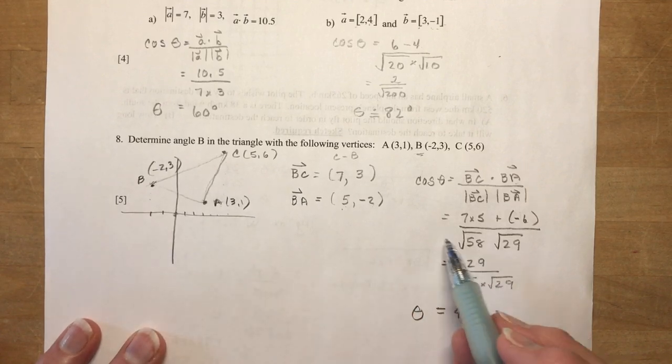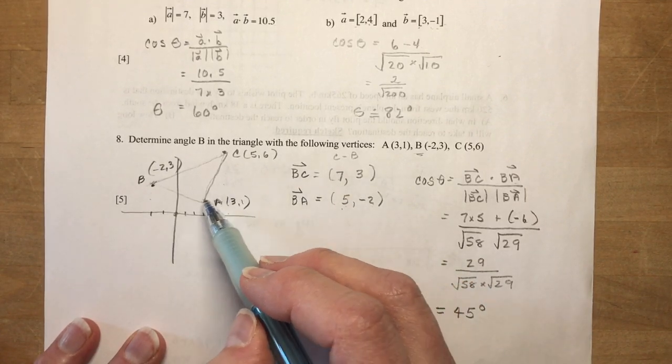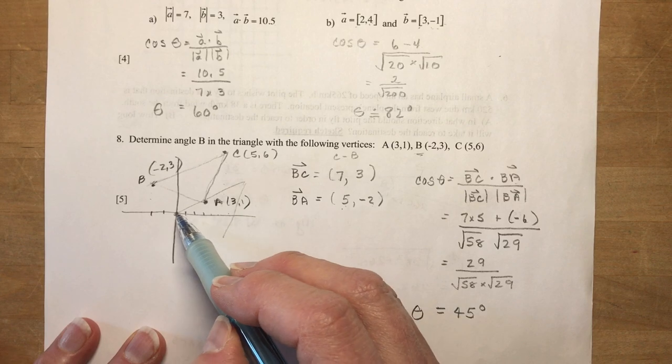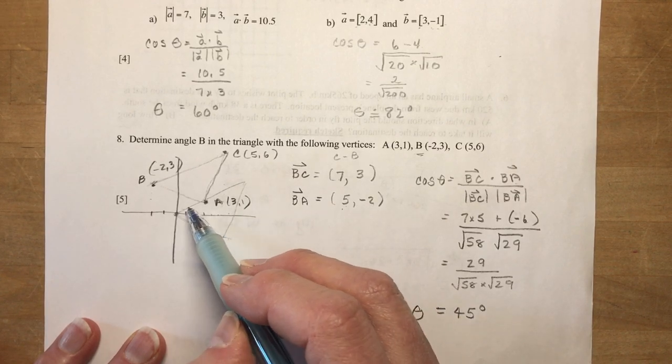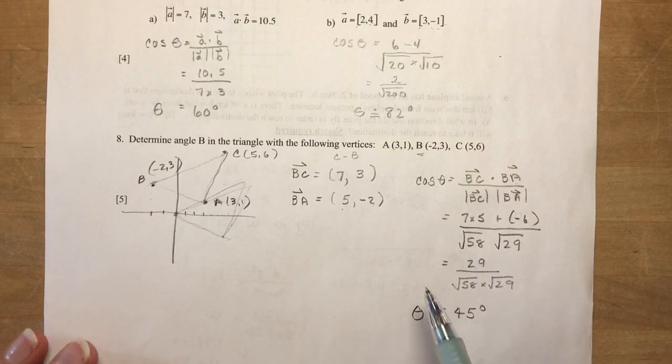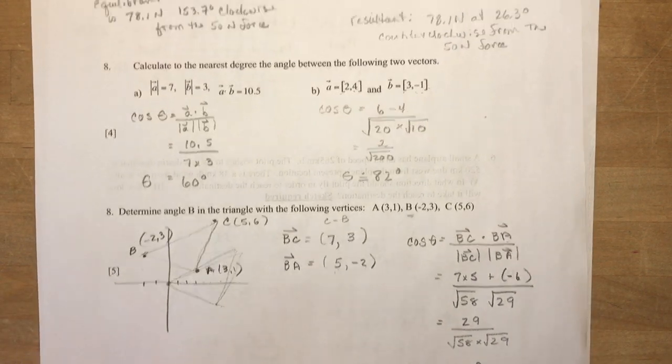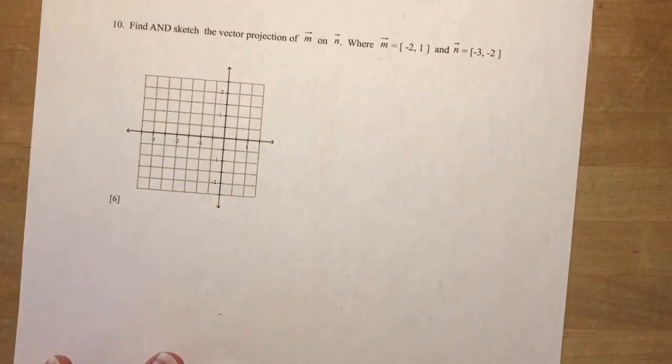And you can do that on your calculator. Shift, second function, cos, and you should get theta is actually equal to exactly 45 degrees. Okay, so when you reposition this BC of 7, 3, you're putting it like right here, right? So once you have it in position, you can do this. You must position it first.